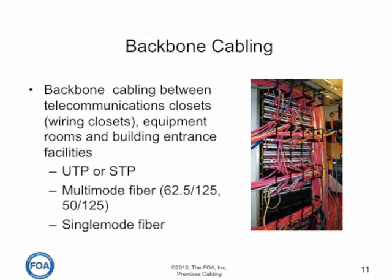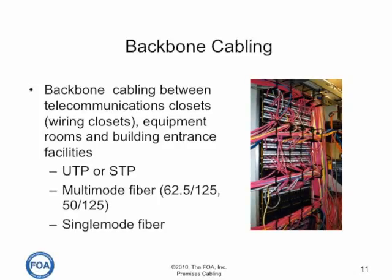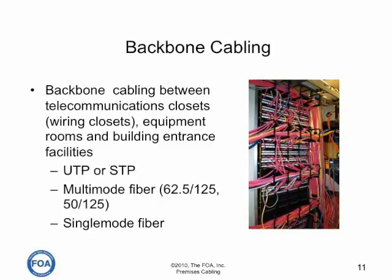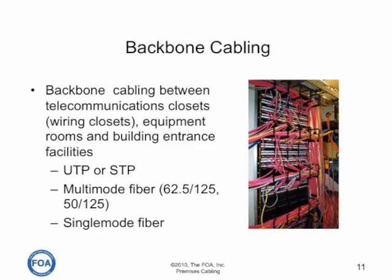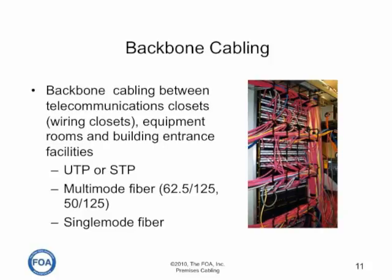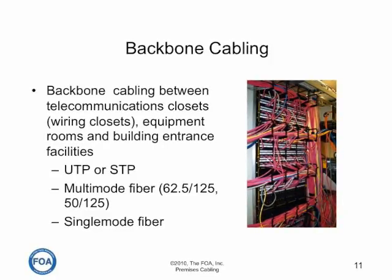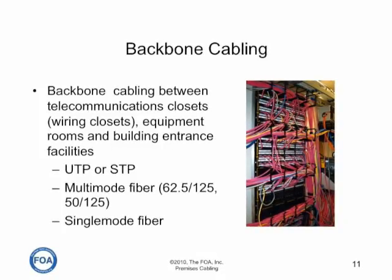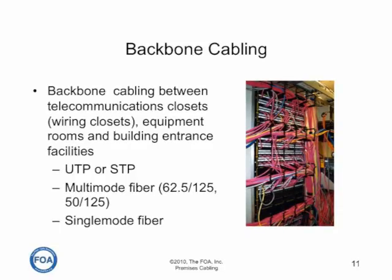Backbone cabling is what we call the cabling that runs from equipment rooms to telecom closets. While it may be unshielded twisted pair, or even screened or shielded twisted pair cabling, as long as it meets the same performance specifications, in enterprise networks it tends to be more multi-mode fiber — typically today 50/125 OM2, 3, or 4 rated fiber — or single-mode fiber, because of the higher traffic on the backbone and the higher bandwidth required.